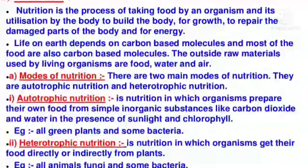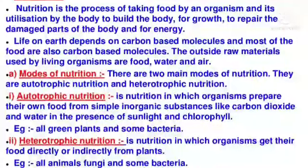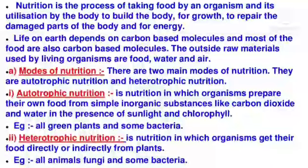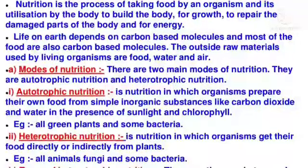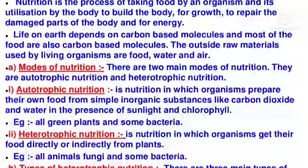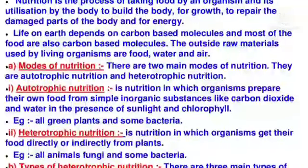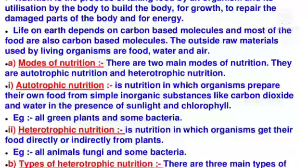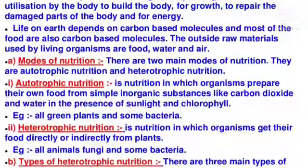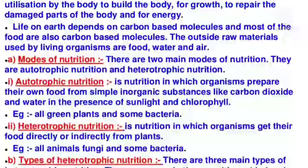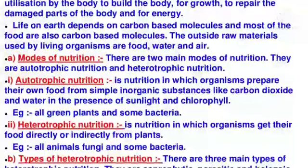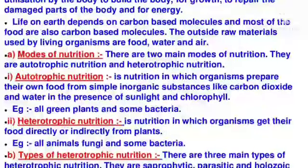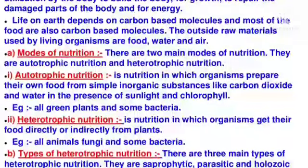Autotrophic nutrition is the nutrition in which organisms prepare their own food from simple inorganic substances like carbon dioxide and water in the presence of sunlight and chlorophyll. Examples are all green plants and some bacteria. Heterotrophic nutrition is the nutrition in which organisms get their food directly or indirectly from plants. Examples are all animals, fungi, and some bacteria.